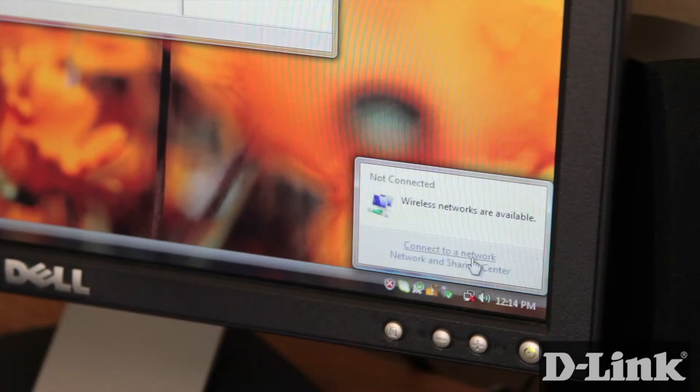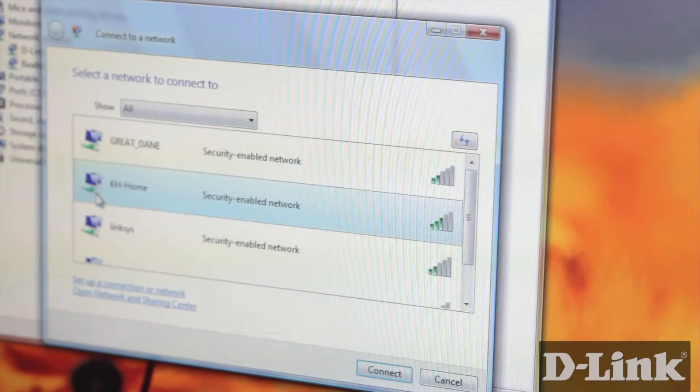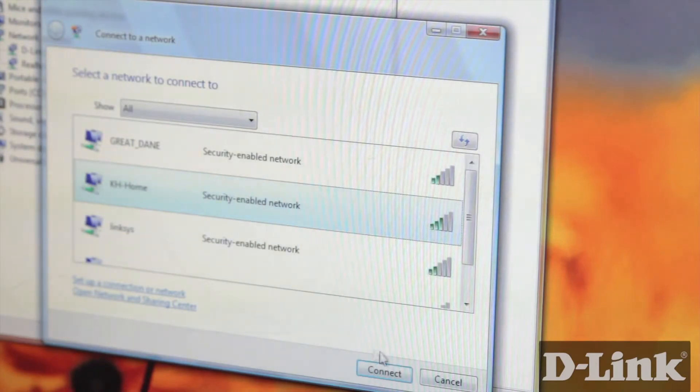In the task bar in the lower right hand corner, click on the Network icon and click on Connect to Network. This will bring up a list of all wireless signals in your area. Highlight yours and click Connect.